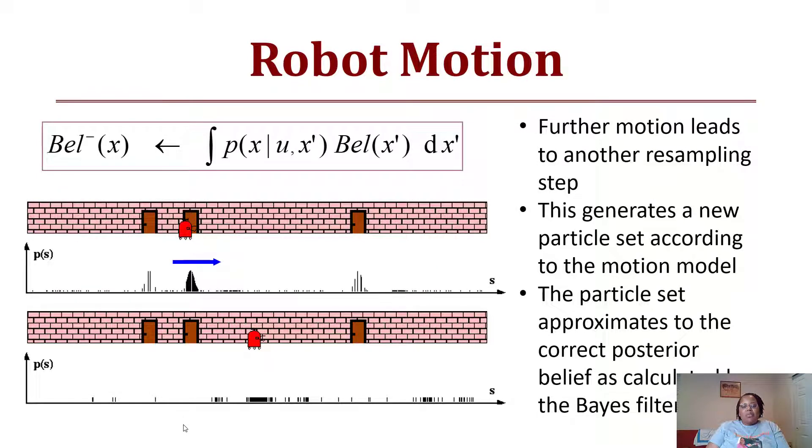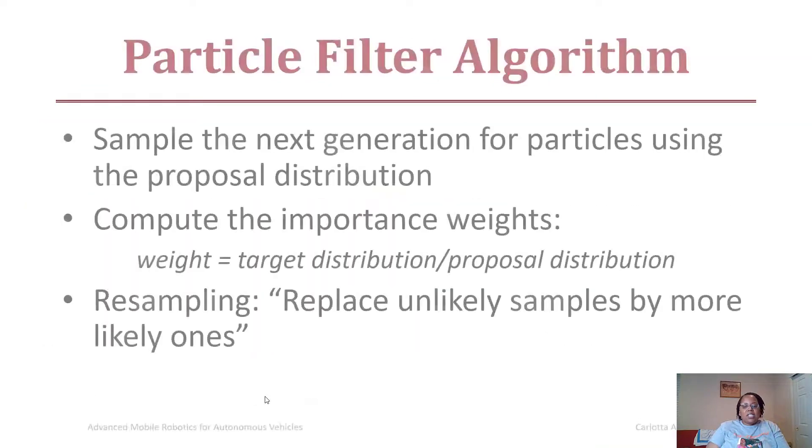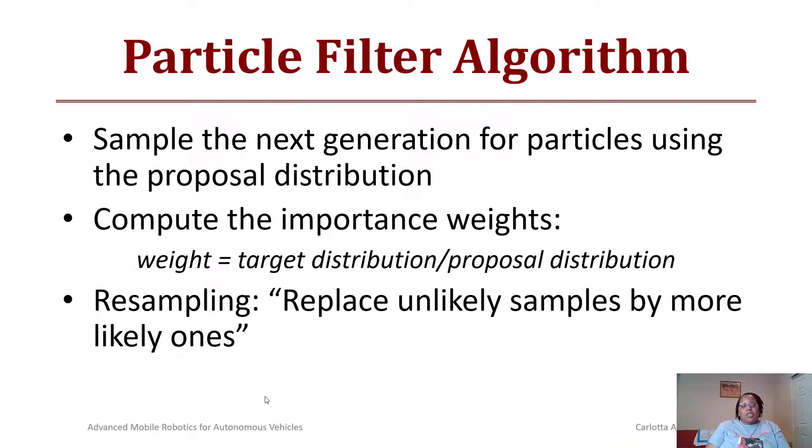Now the robot moves again and my particle distribution goes back to being uniform, where we once again have a darker cluster, although uniform, because that's the most likely location for the robot. Until I take another sensor reading, it's back to having this uniform distribution and it won't be weighted again until I get to the next door.